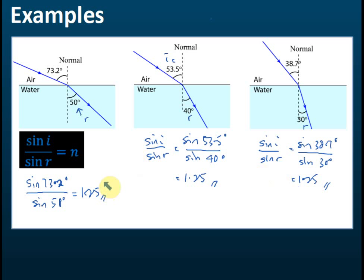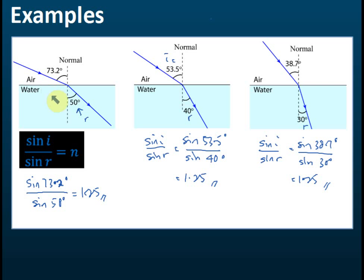Is 1.25 fixed for every question? No — it's fixed only for the same medium. Air to water gives 1.25, but air to glass or air to perspex will give a different value. The refractive index is the same only for the same medium. Different media give different refractive indices.